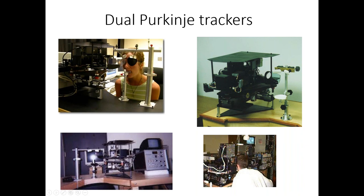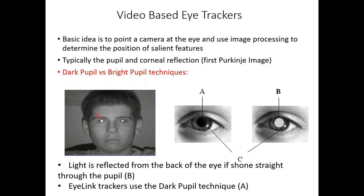One of the only ways of achieving head stability was to use a bite bar — a common thing when eye tracking began, where experimenters would periodically wipe up participants' dribble. These are large, monocular devices — binocular tracking required two dual Purkinje trackers side by side. They were very accurate but had limitations, including a very small trackable range: the amount of eye rotation before the fourth Purkinje image was lost.